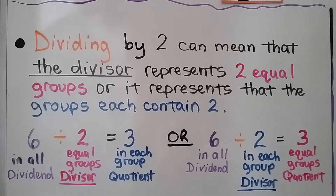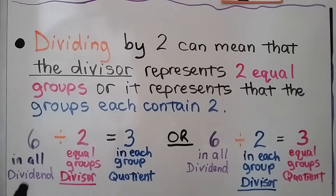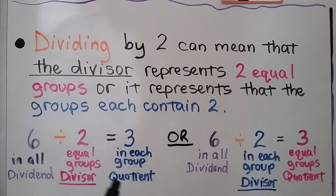Dividing by 2 can mean the divisor represents two equal groups, or it represents that the groups contain 2. Here we have 6 in all — that's our dividend — and it's divided into two equal groups — that's our divisor. That means we're going to have 3 in each group — that's our quotient.